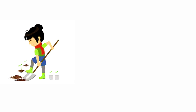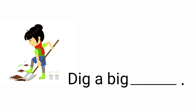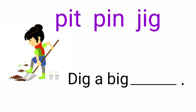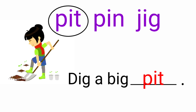Look at the next picture — there is a girl digging a pit. The incomplete sentence is: dig a big dash. The given words are pit, pin, jig. So here the suitable word is pit, so we need to circle the word pit and then write it to the sentence: dig a big pit.